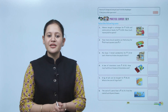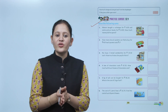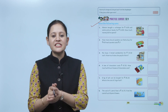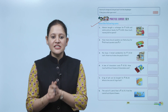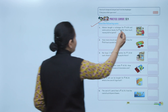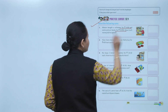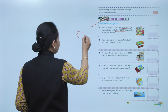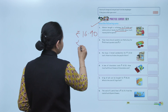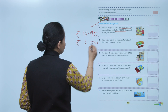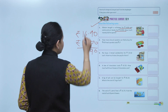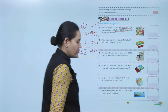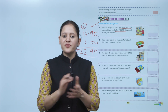Next is practice corner 10.4 — solve the following sums. Manan bought a sellotape for rupees 6 and some picture books for rupees 16.90. How much money did she spend? Add the cost of both items: 6 plus 16.90 equals total cost rupees 22.90. Practice all the questions of this exercise.